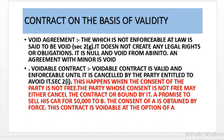Void agreement. The void agreement means the agreement is not a contract and is not enforceable at law from the very beginning — it is void. It has no effect at all. Section 2G of the Indian Contract Act defines the void agreement. It does not create any legal right or obligation. It is null and void from the very beginning — ab initio means from the very beginning. An agreement with a minor is void.